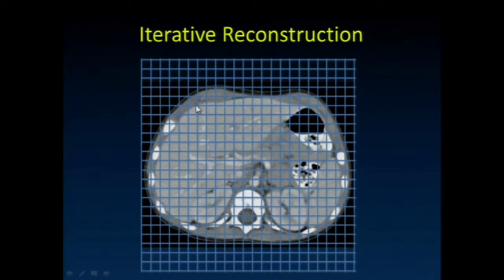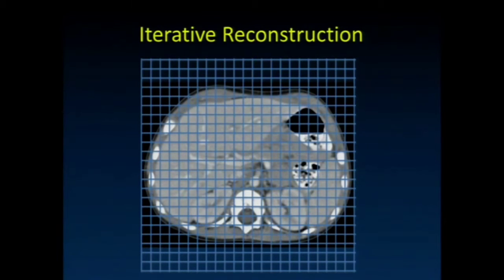We're moving more and more toward iterative reconstruction techniques, away from filtered back projection. The main reason is that we can model the image formation process better, and therefore handle noise better. You might ask why we didn't do this before — the reason is that it's computationally an extremely complex problem requiring a tremendous amount of computing power. The theoretical mathematics aren't as complex as filtered back projection, but the computational power needed is much greater.